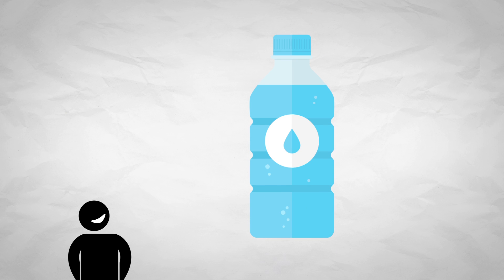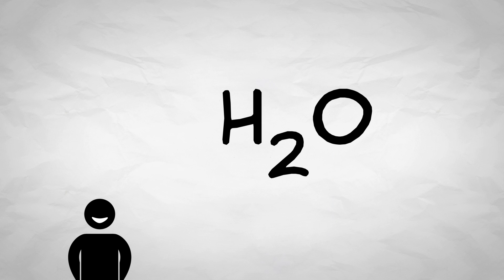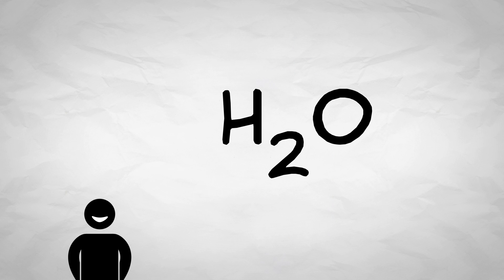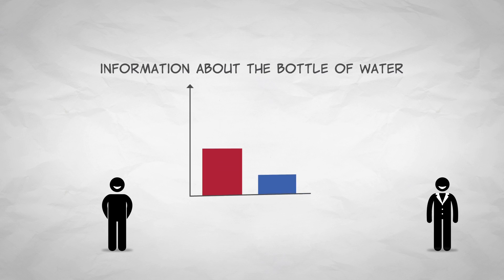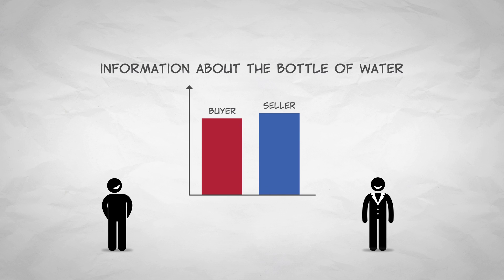Let's start with an example. Imagine you're buying a bottle of water. You probably have a pretty good idea of what you're getting — H2O — especially if you've bought the same brand of water before. The information that the seller and the buyer have is pretty close to equal.